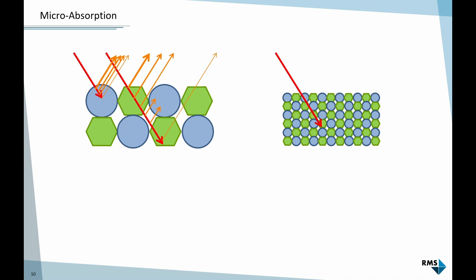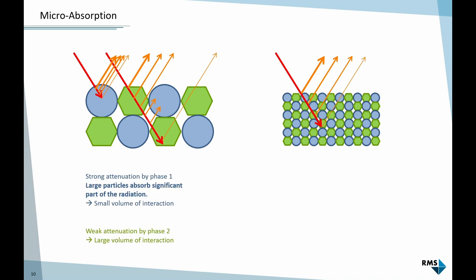If the primary beam interacts with a blue crystal, it will be absorbed quickly and we get diffraction signal only from a small volume. If the beam interacts with the green crystal, it will not be absorbed much, and we get a much larger volume of interaction from the green phase. On the other hand, if the same sample was fine grained, every particle would absorb an insignificant amount. The blue particle absorbs a little bit, but the next particle might be green or blue.